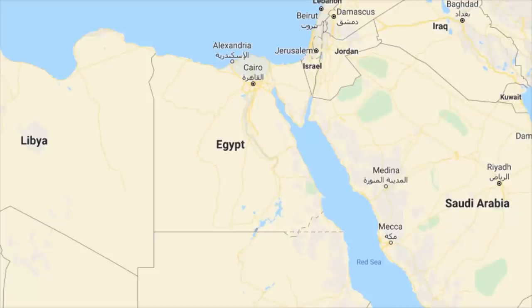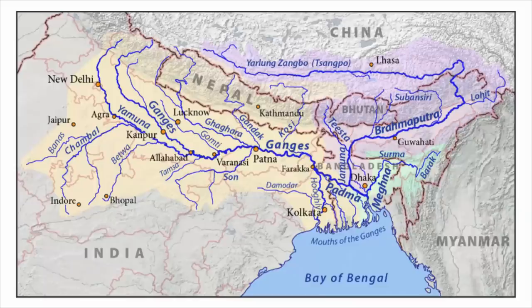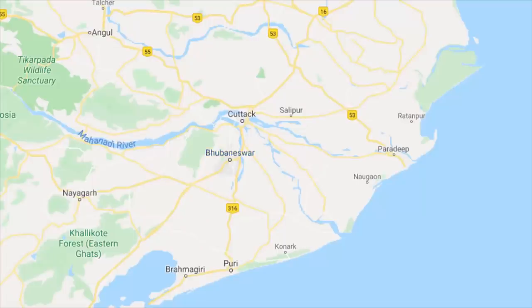Floodplains are often rich in nutrients and create fertile farmland. The floodplain surrounding Africa's Nile River has helped Egyptian civilization thrive for thousands of years. In India, the regions near the Ganga River and Brahmaputra River are prone to floods, but at the same time the region is also fertile. The state of Odisha also suffers from flooding of the river Mahanadi. The Mahanadi Delta region, just near the eastern coast of India, is mostly prone to flooding.